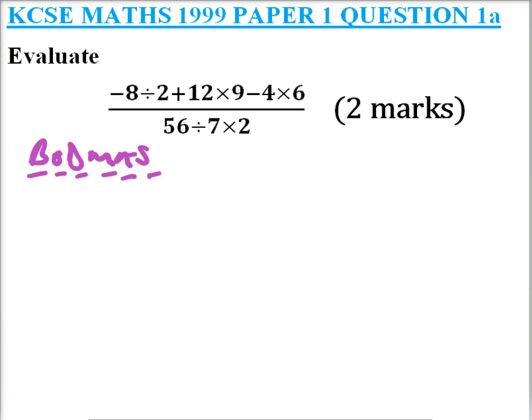From there we look at - we don't have brackets, we don't have of, we have division. So we will start by dividing minus 8 divided by 2, and that should give us minus 4.